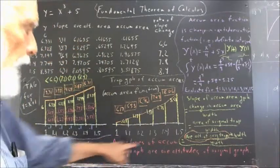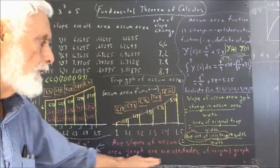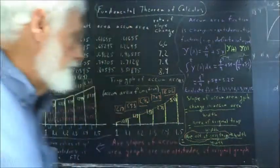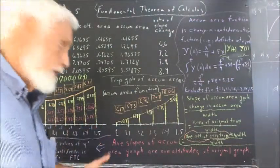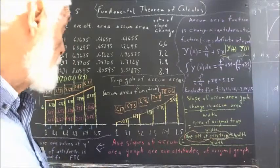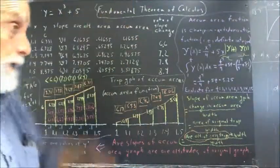So it appears then that the average slopes of our accumulated area graph are the average altitudes of the original graph. Now that seems kind of astounding. Turns out there's a very straightforward explanation for it though, and that explanation is right at the heart of the fundamental theorem of calculus.